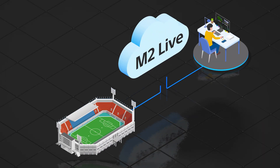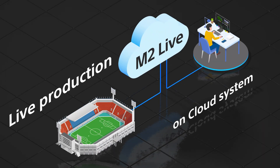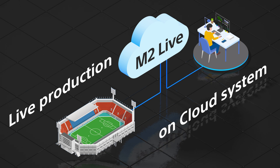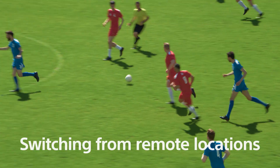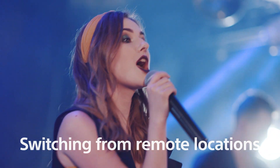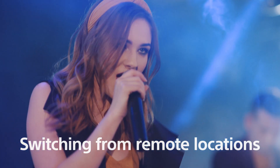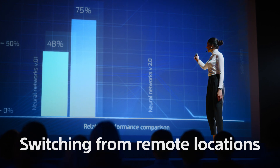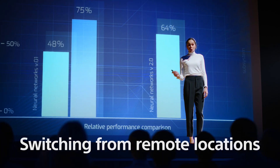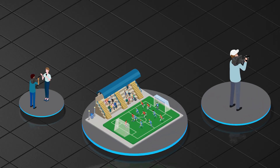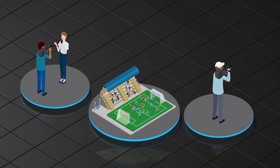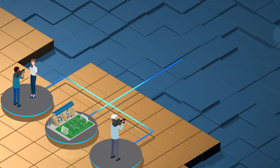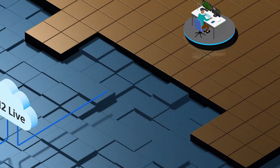Our solution to this is M2 Live, a software-based switching system deployed in the cloud. Whether it's sports competitions in faraway arenas or performing arts in distant halls, remote video and audio switching can make you feel like you're right there. Live broadcasts typically require large numbers of production staff on site, but now live production can be done in the cloud.